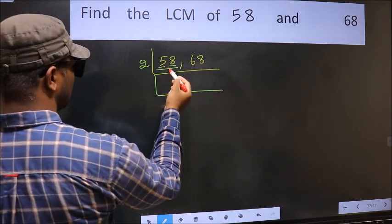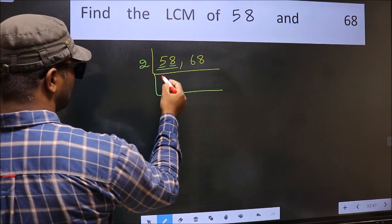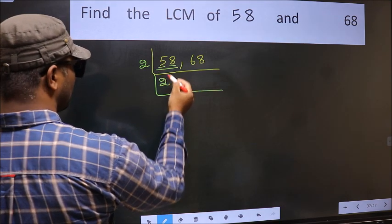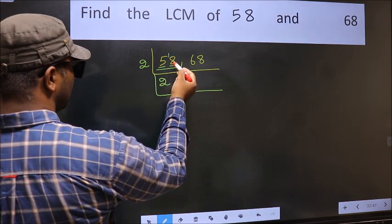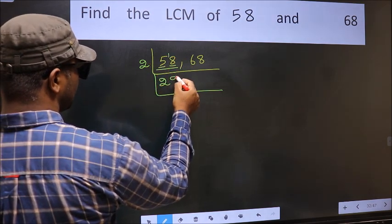First number, 5. A number close to 5 in 2 table is 2, 2 is 4. 5 minus 4, 1, 1, carried forward 18. When do we get 18 in 2 table? 2, 9 is 18.